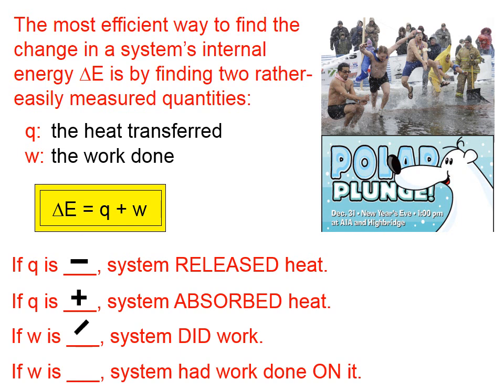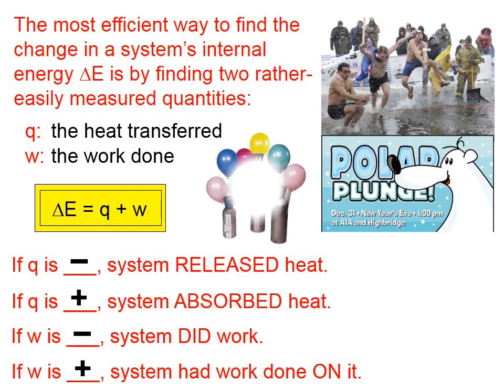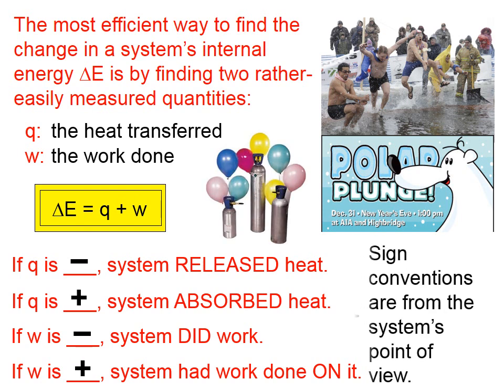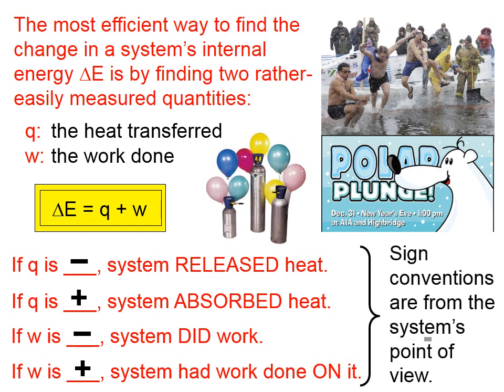If w is negative, the system did work. If w is positive, the system had work done on it. These sign conventions are from the system's point of view.